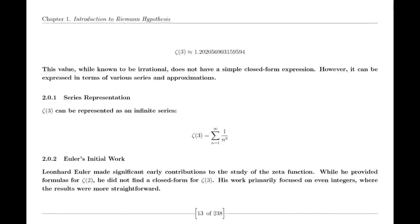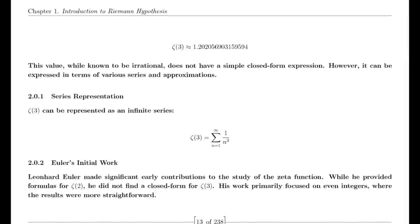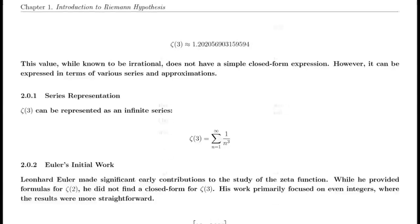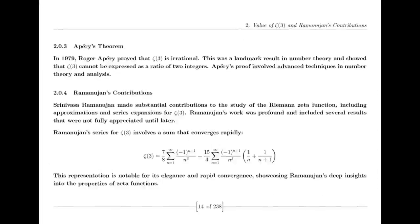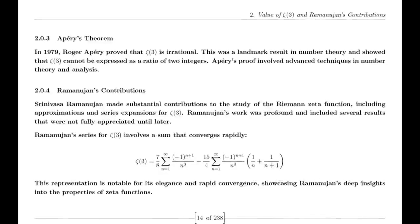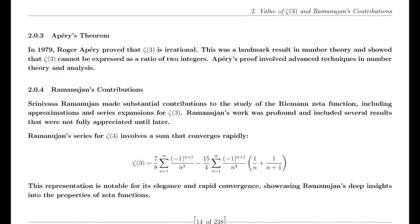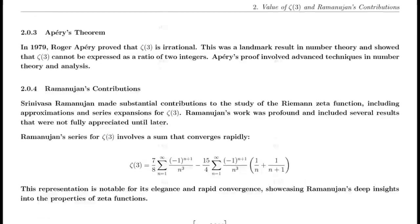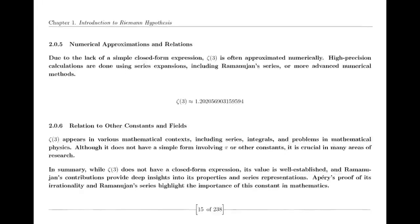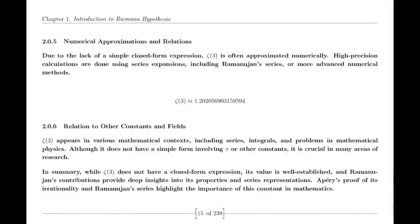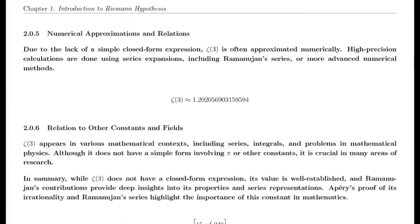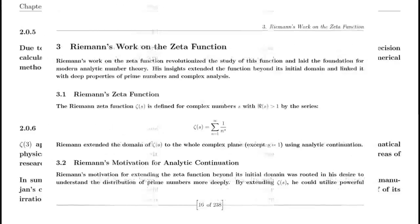In 1859, Riemann published his seminal paper on the distribution of prime numbers, which introduced the zeta function and laid the groundwork for modern analytic number theory. This paper was a milestone in mathematical history and has had a lasting impact on the field, influencing subsequent research and discoveries.